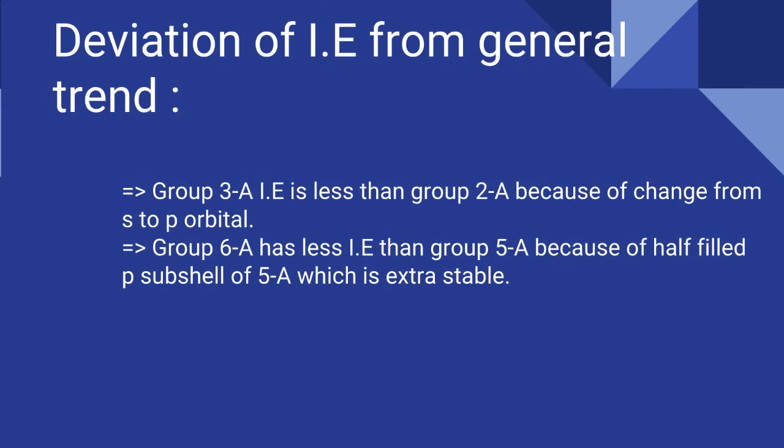There are some deviations of ionization energy from the general trend. The elements of group 3A have less ionization energy than group 2A, although the trend along the period is that ionization energy increases. The reason is that when we shift from group 2A to 3A, the nature of orbital changes from S to P. P orbital is less penetrating, so electron removal from P orbital in group 3A is easier.